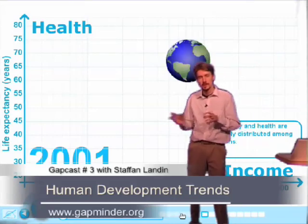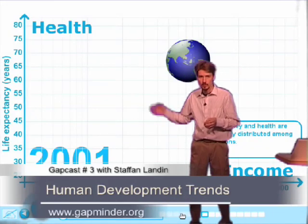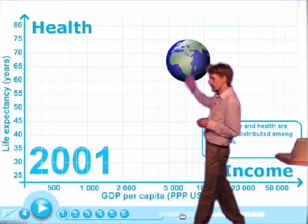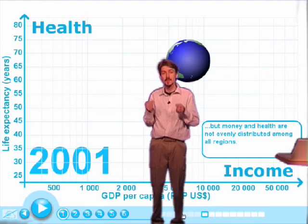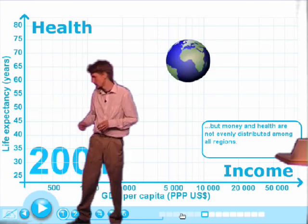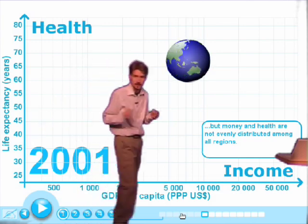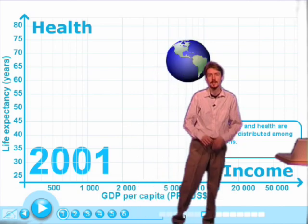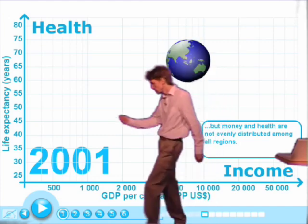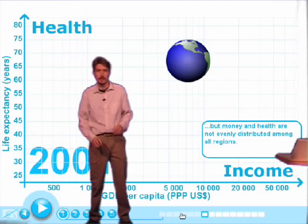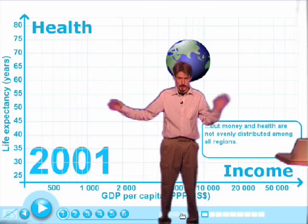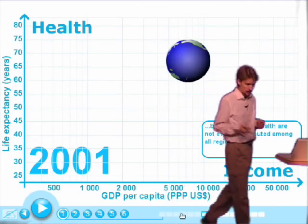How big are the differences between the countries in the world today? I'm going to try to show it here on this graph that replaces north and south with health. We have life expectancy rate on this axis here — up here you live 80 years, 50 years on average in the middle, and down here only 30 years on average. On the other axis I will replace east and west with income, GDP per capita — from $500 per capita up to $50,000 per capita. Big differences in both directions.